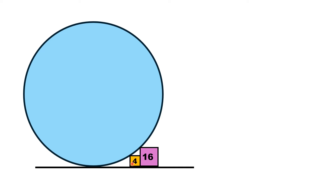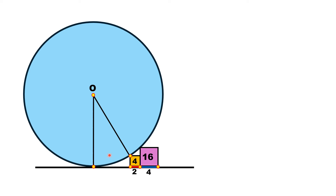Since the area of the smaller square is four units, its side length is two units. The larger square has area equal to 16 square units, so its side length is four units. Let us mark the center of the circle and draw a radial line to the tangency point on the line. We draw another radial line to a second tangency point. Both line segments are of length r, the radius of the circle.